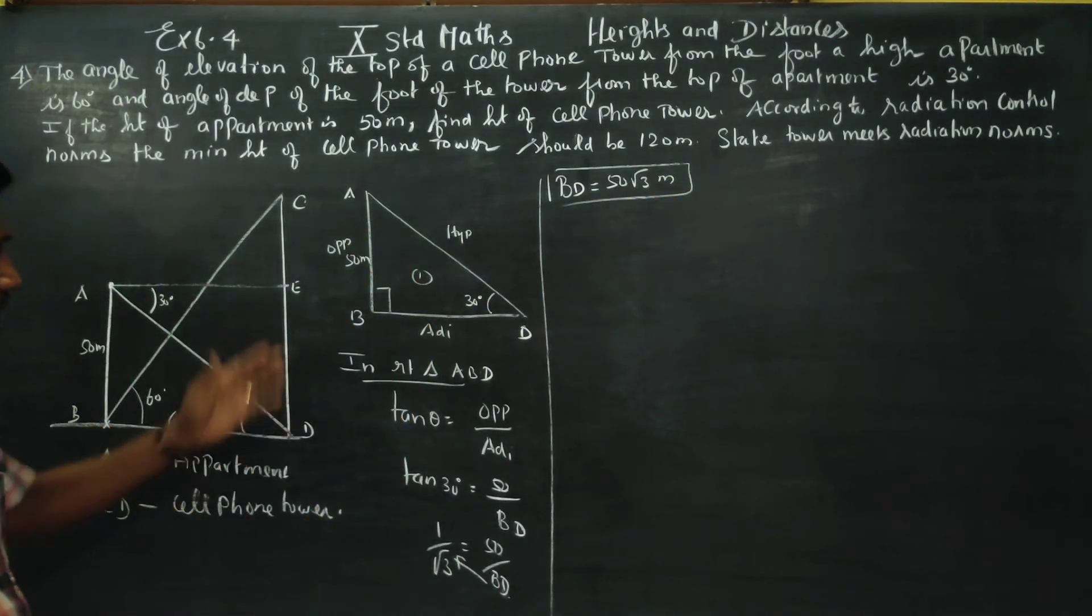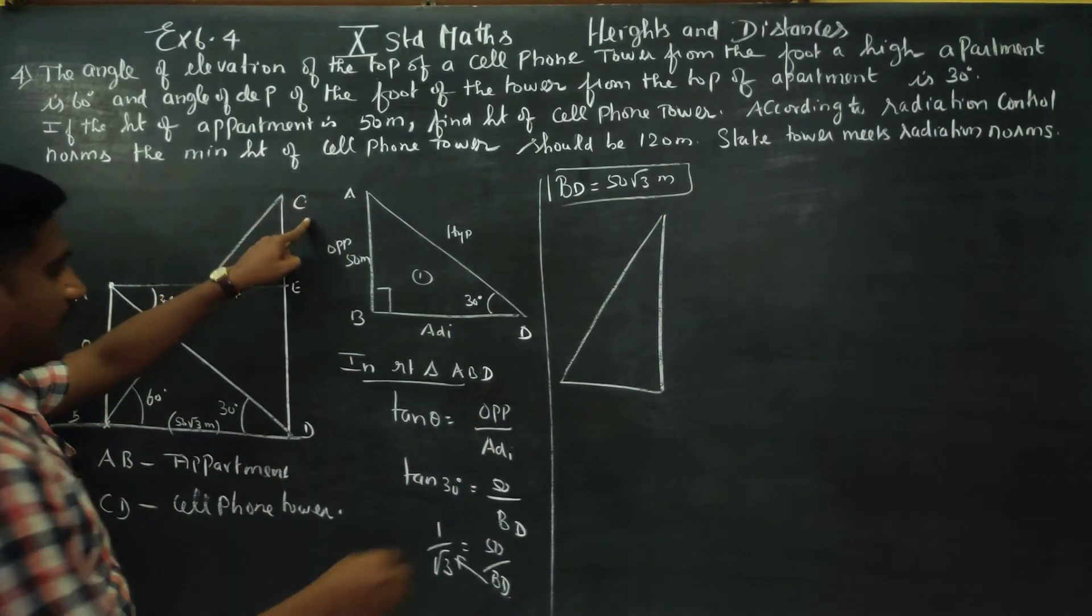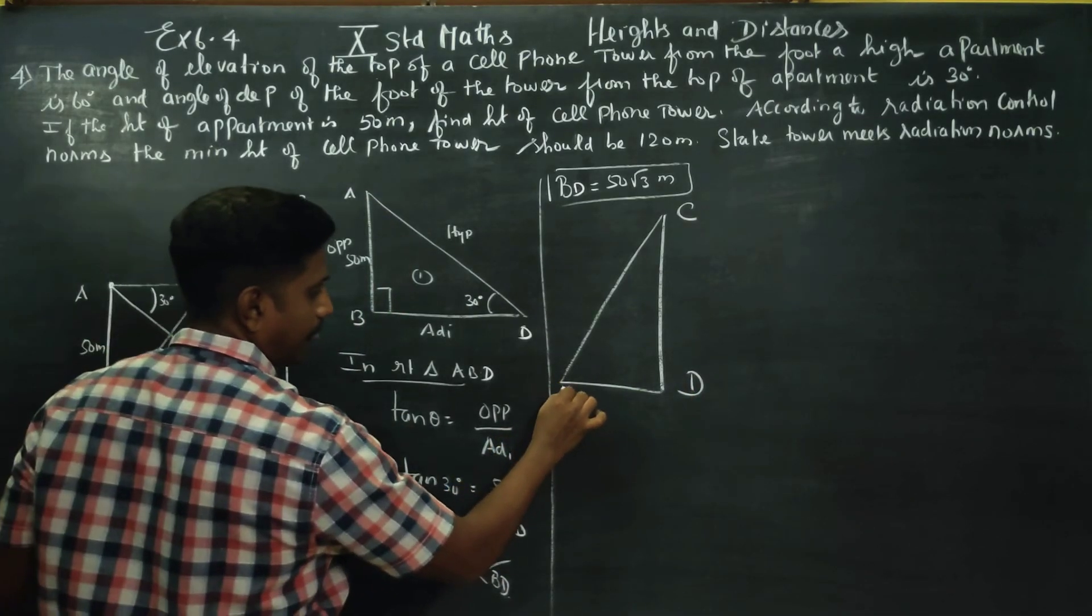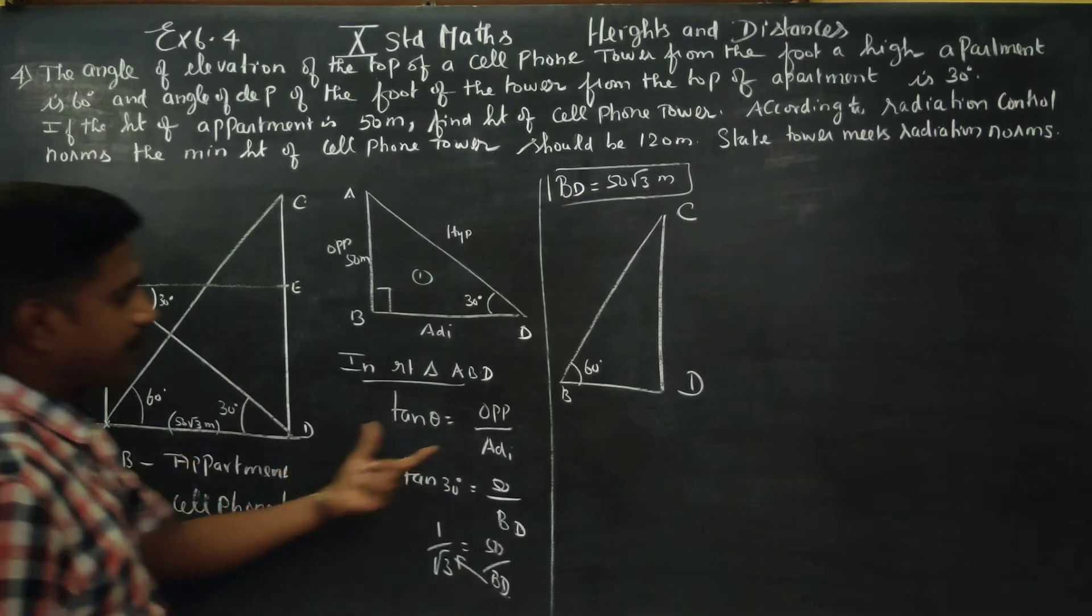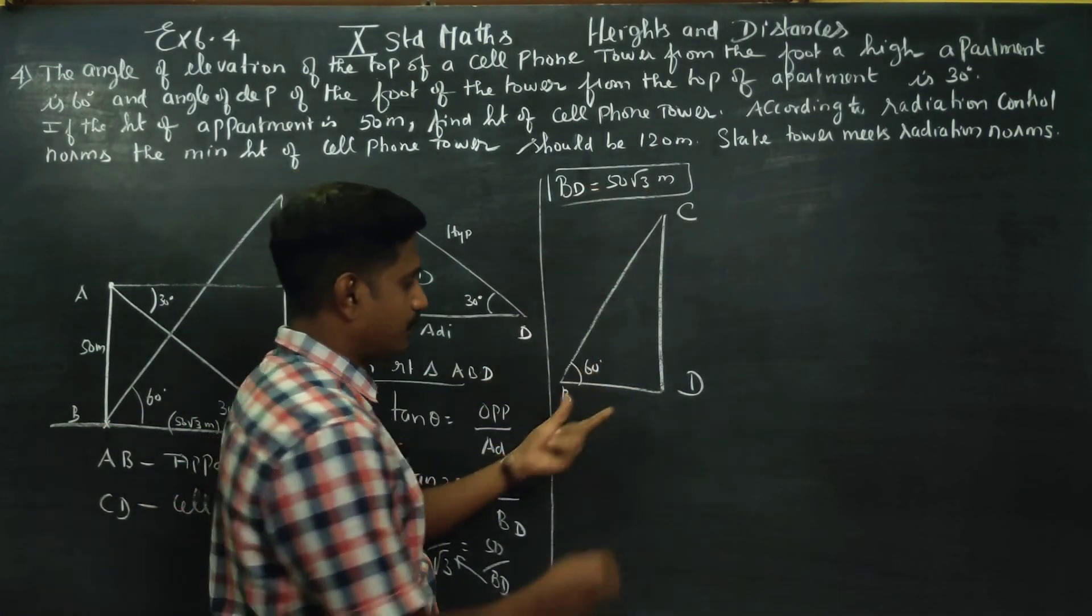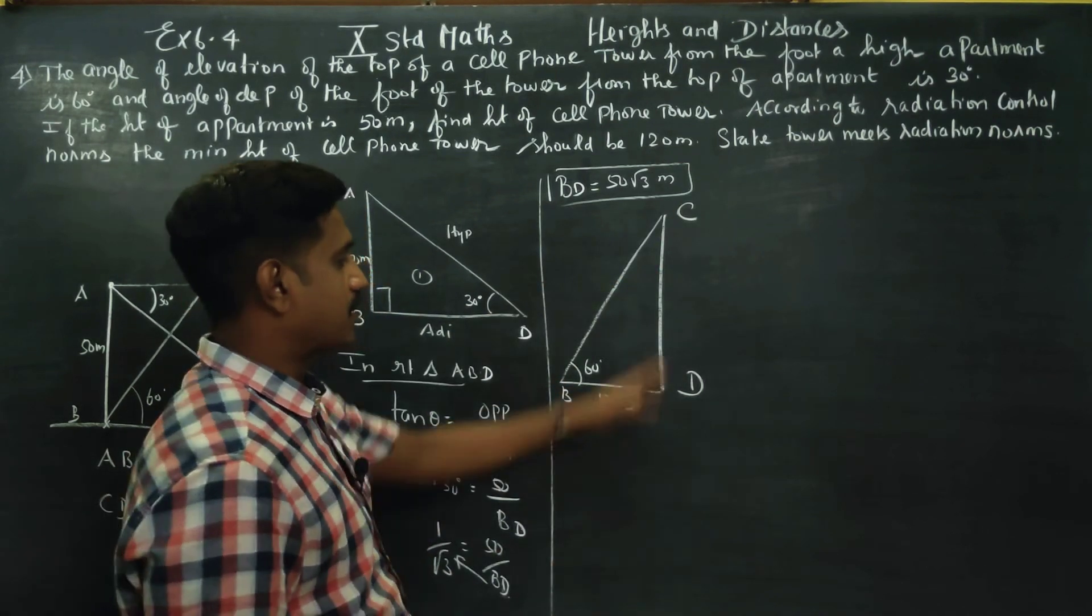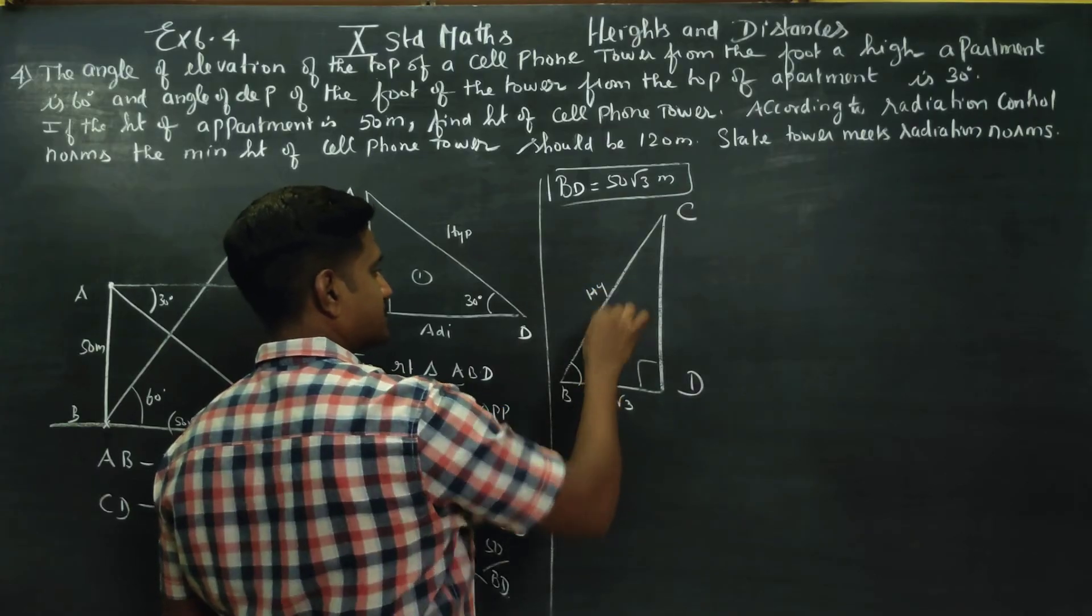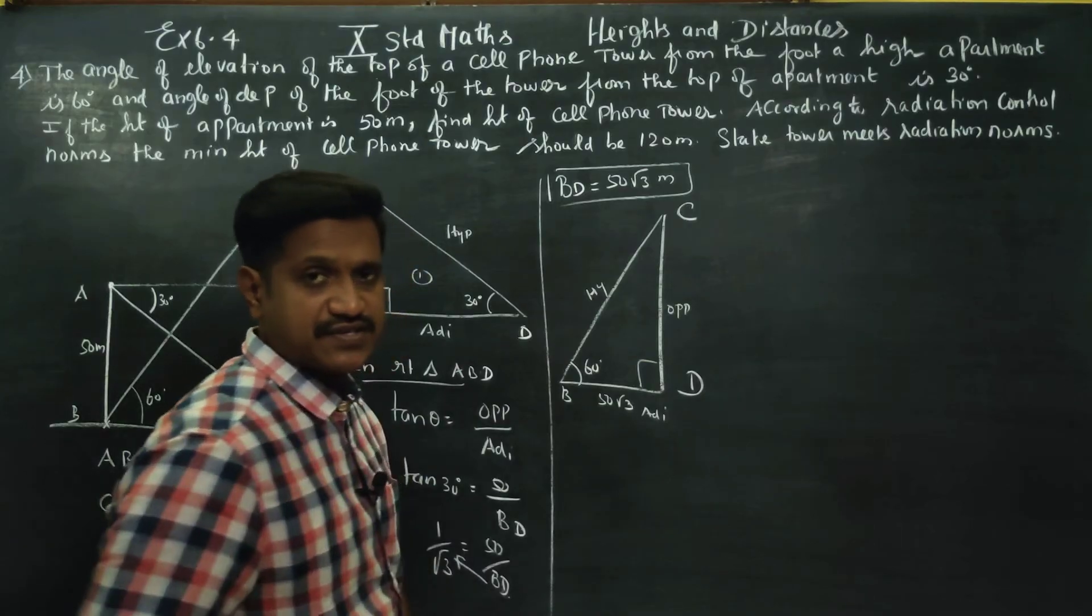This is the diagram. Let's look at the triangle CDB. This is 60 degrees. B is 50 root 3. CD we need to find. 90 is hypotenuse, 60 is opposite, this is adjacent.